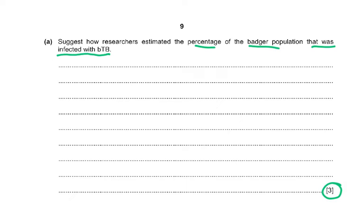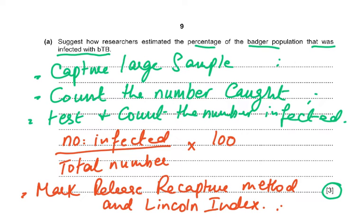So you capture a very large sample — not just 5, 6, or 10, but a large number. Count the number caught, then test and count the number infected. Use the formula: number infected over total number multiplied by 100, because we need to find the percentage infected with BTB. This is also called the mark-release-recapture method and the Lincoln index.